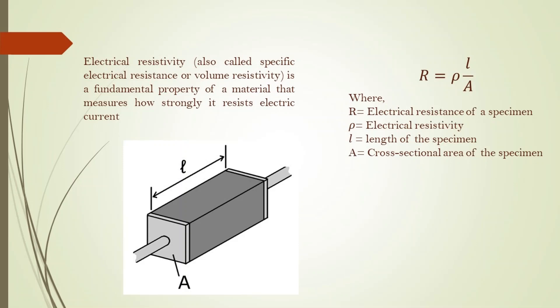What is electrical resistivity? Electrical resistivity is the fundamental property of a material that describes how strongly it resists electric current. For low resistive materials, electrons do not get resisted and we get a high current — it is highly conducting. And if the resistivity is very high, then the current is blocked, making it an insulator.